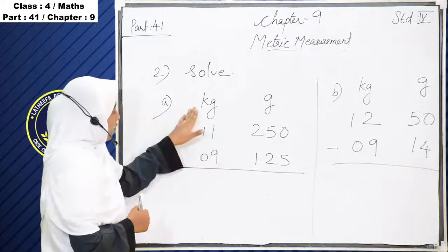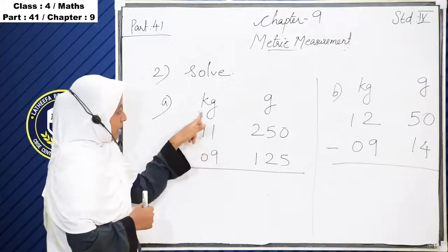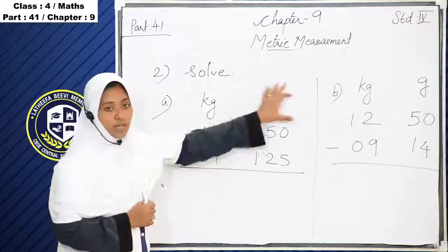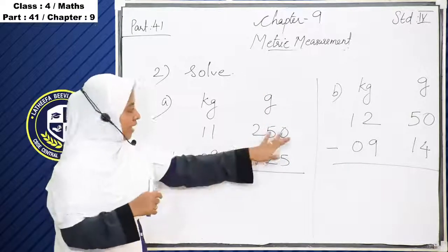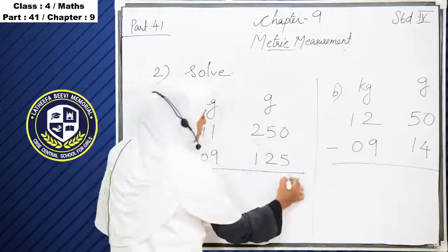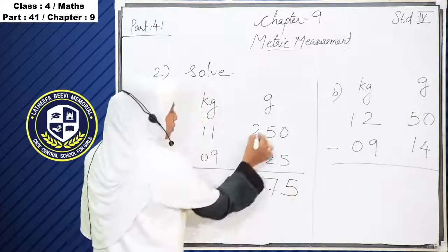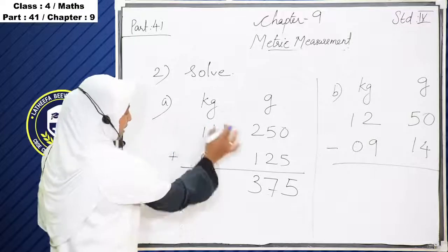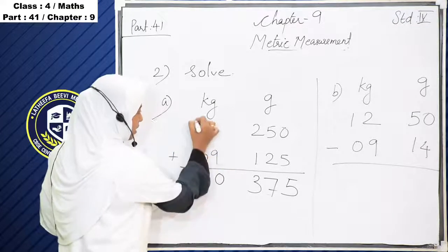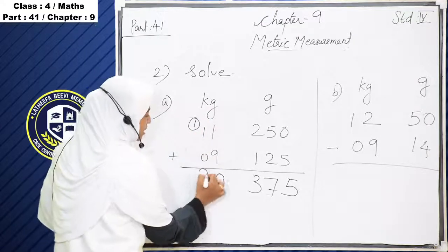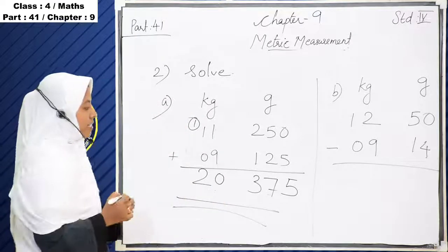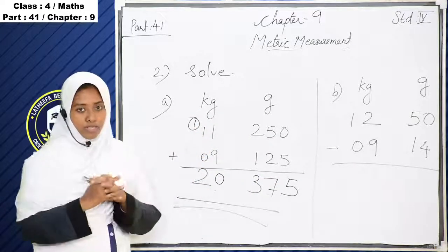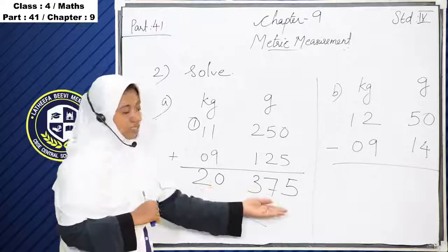First one: 11 kilogram 250 gram plus 9 kilogram 125 gram. First we add the gram portions: 0 plus 5 is 5, 5 plus 2 is 7, 2 plus 1 is 3, so gram portion gives 375 gram. Then the kilogram portions: 1 plus 9 is 10, carry over 1, then 1 plus 1 is 2. So the answer is 20 kilogram 375 gram.